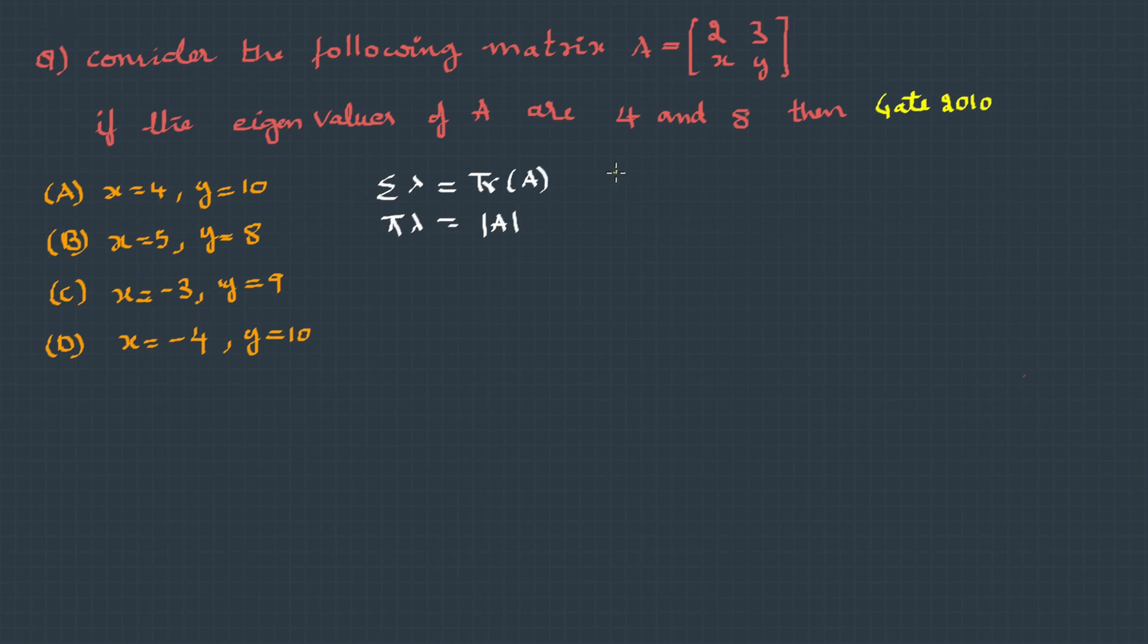It is given that one of the roots, let's take lambda 1 as 4, and the second root is 8. So lambda 2 is 8. The sum of the roots is trace of the matrix. Therefore, lambda 1 plus lambda 2 must be the trace of this, that is 2 plus y. Once we substitute these values, 4 plus 8 equals 2 plus y, which means that y is equals to 10.